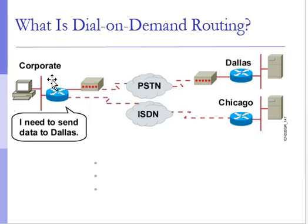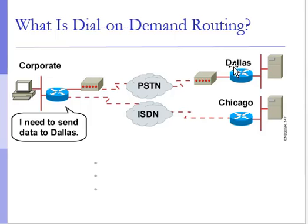In this diagram you can see the corporate side and the user's server in Dallas. These are U.S. state names. If this router wants to send data to Dallas, it asks the corporate hub. The hub will already know the paths toward Dallas and Chicago, and will follow that path — this is the concept of DDR in action.